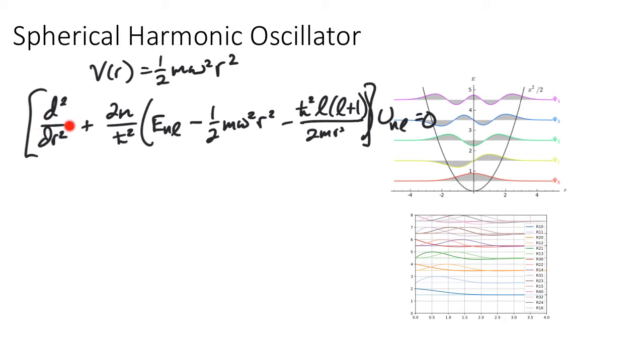So that we have, again, the kinetic part, the energy eigenvalues, which I've moved on to the left-hand side here, the potential term and the centrifugal barrier, all giving rise to this, or all acting on the function that needs to go to 0.